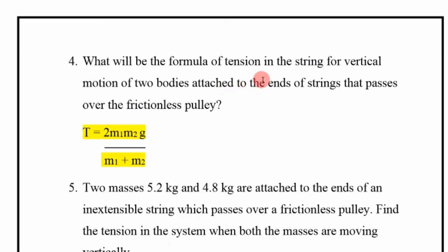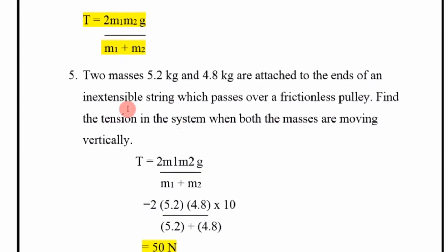What will be the formula of tension in the string for vertical motion of two bodies attached to the end of a string that passes over a frictionless pulley? T is equal to 2m1m2 divided by m1 plus m2, multiplied by g.